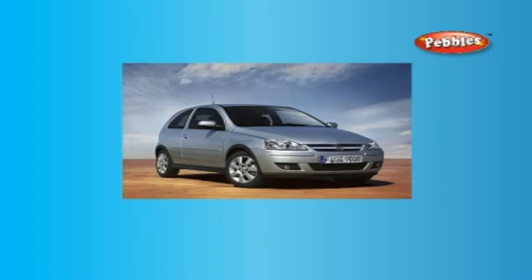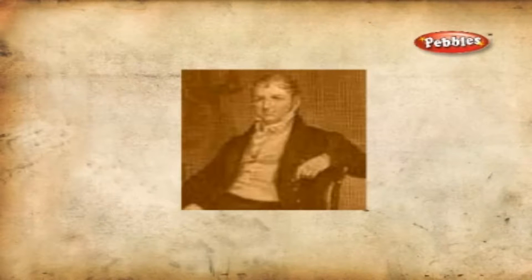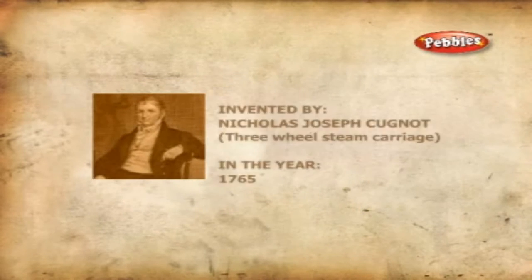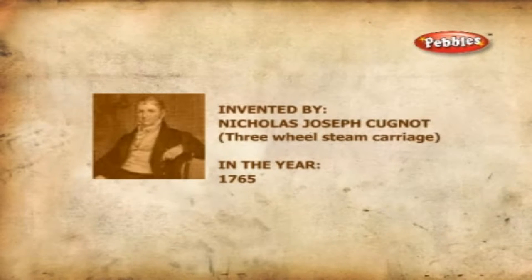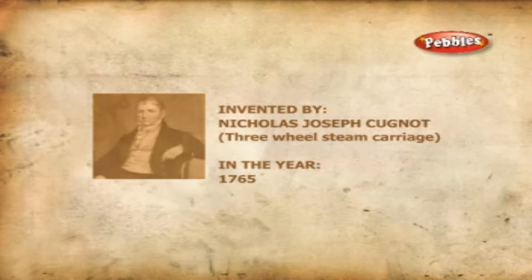The first motor vehicle powered by steam was made in 1765 by French engineer Nicholas Joseph Cugnot (1725–1804). This vehicle is a three-wheel steam carriage which was designed to carry cannons.